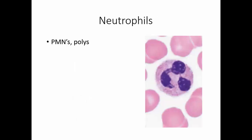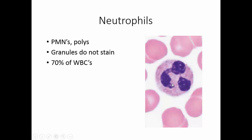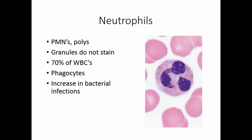Neutrophils are sometimes called polymorphonuclear cells, PMNs, or polys, because of their lobed nucleus. Their granules do not pick up any particular stain color, but the cytoplasm appears granular. About 70% of circulating white blood cells are neutrophils. Neutrophils are primarily phagocytic and prefer small things like bacteria. If we see neutrophils above 70% of white blood cells along with leukocytosis, that suggests a bacterial infection.